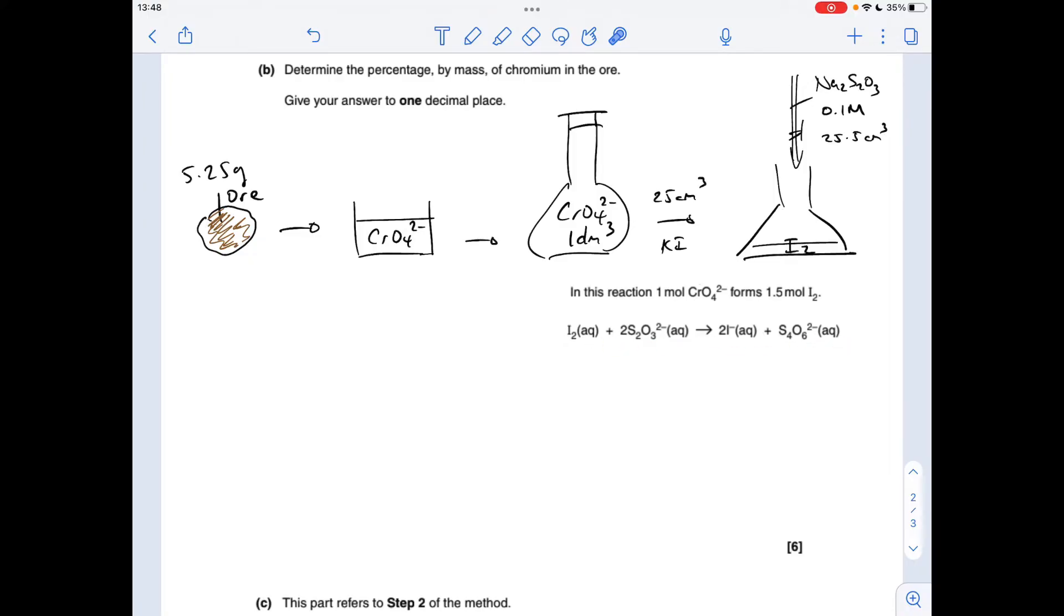So the first thing I want to do is work out the moles of thiosulfate ions that we used in the titration, so concentration times volume in decimeters cubed. That comes out at 2.55 times 10 to the minus 3. Next thing I'm going to do is work out the moles of iodine that was in there. So that's obviously half the thiosulfate ions, so that's 1.275 times 10 to the minus 3. Now we can work out from that ratio how many moles of this ion must have been in that 25 cm cubed.